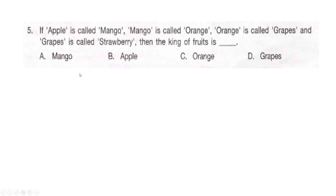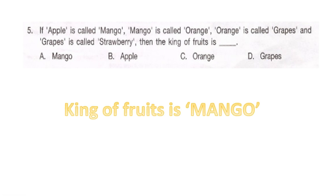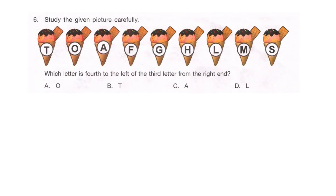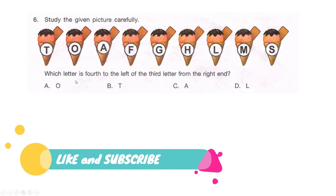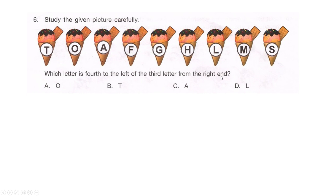The king of fruits is universally mango, but in this problem mango is called orange — so the king of fruits is orange. That is option C. Next question: study the given picture carefully. Which letter is fourth to the left of the third letter from the right end? Is it option A: O, option B: T, option C: A, or option D: L? Read it carefully and take your time.